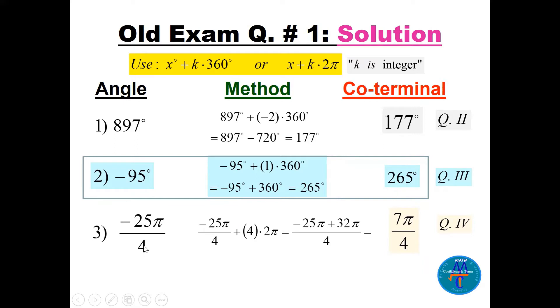For -25π/4, this is also a negative angle in radians, so we need to add k times 2π to find a positive angle between 0 and 2π.